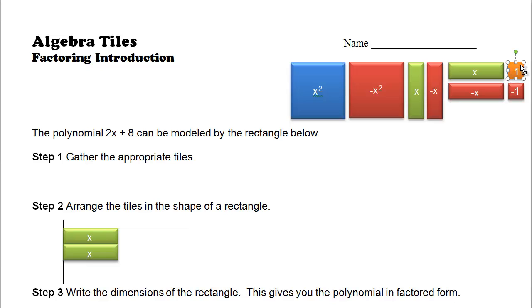And we want to form a rectangle. So there's one, two, hold my shift key down to get a couple more. There are four of them, hold my shift key down to duplicate them again. And we have eight tiles. So 2x plus 8 can be factored into x plus 4 by 2.